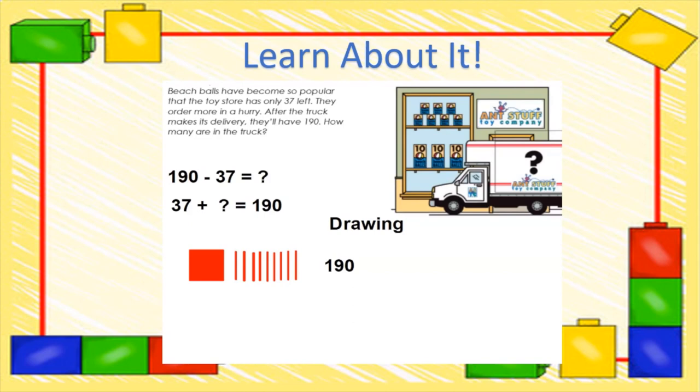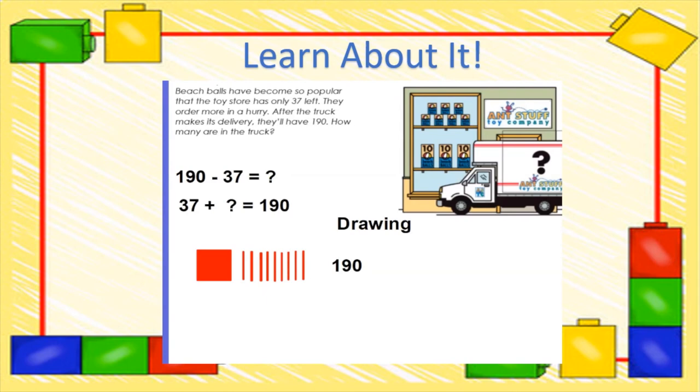So let's go ahead and take a look at what we know from this. We know that the beach balls are super popular and in the store there are only 37 left. So we see that we have our 37 beach balls in the form of three tens—so 10, 10, and 10—and then we have these individual beach balls which are 1, 2, 3, 4, 5, 6, 7. So we know that we have 37 beach balls. They're going to get a truck load. And after they're done with the truck load, they're going to have 190 beach balls.